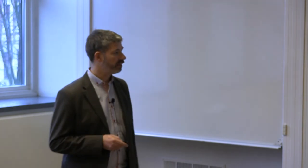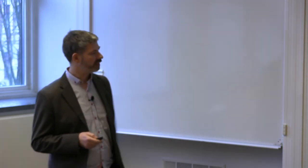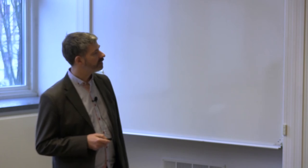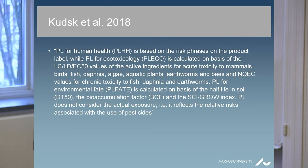I don't have the one on health here, because I couldn't find it in that article. So, but basically a very complex tax. So I took this citation from Kusk et al, 2018, where they say PL for human health is based on the risk prices on the product label, while PL for ecotoxicology is calculated on the basis of some other values. PL for environmental fate is calculated on the basis of half-life in soil and bioaccumulation and the Cygro index.